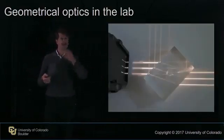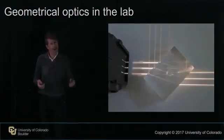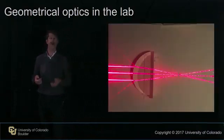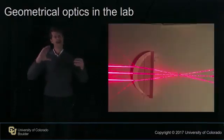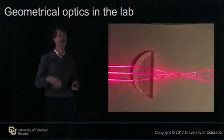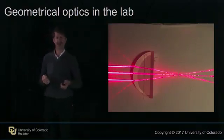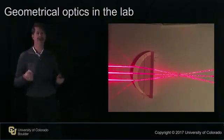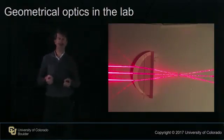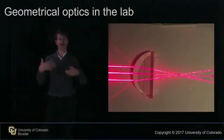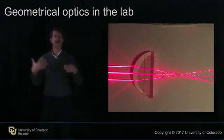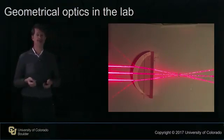Those rays might reflect off of the back of this prism, or they might refract through a block of glass. If you curve that block of glass, you might focus the rays, and you've just made yourself the simplest possible lens. We'll use diagrams like this, based on very simple trigonometry, to derive the properties of lenses and optical systems made of lenses.